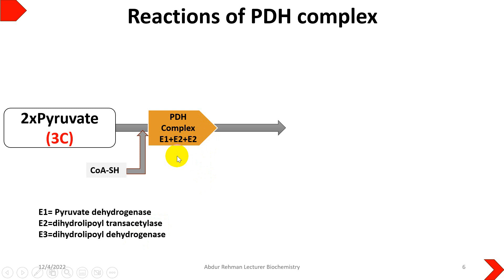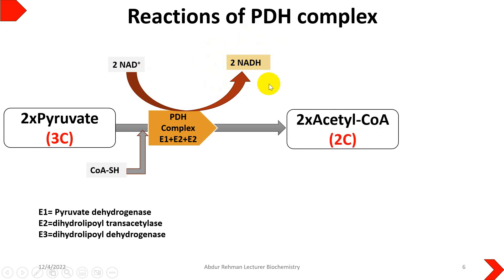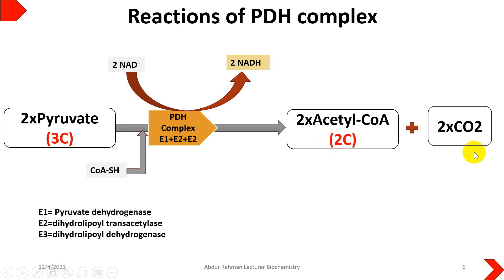All three subunits work in a systematic way. Since this process takes place twice — because two pyruvates are present — two NAD molecules are converted into NADH, which will later be cashed in the electron transport chain. A decarboxylation reaction occurs, releasing carbon dioxide, and since it happens twice, two carbon dioxide molecules are released in the process.